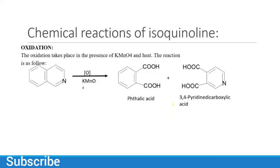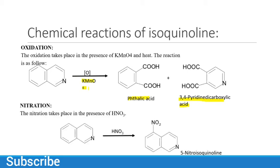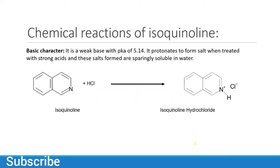Regarding chemical reactions: an oxidation reaction takes place giving the final products phthalic acid and 3,4-pyridine dicarboxylic acid in the presence of KMnO4. Nitration takes place in the presence of HNO3 to give 5-nitroisoquinoline. For basic character, isoquinoline reacts with HCl to form isoquinoline hydrochloride. It is a weak base with a pKa of 5.14, protonates to form salts when treated with strong acids, and these salt forms are sparingly soluble in water.